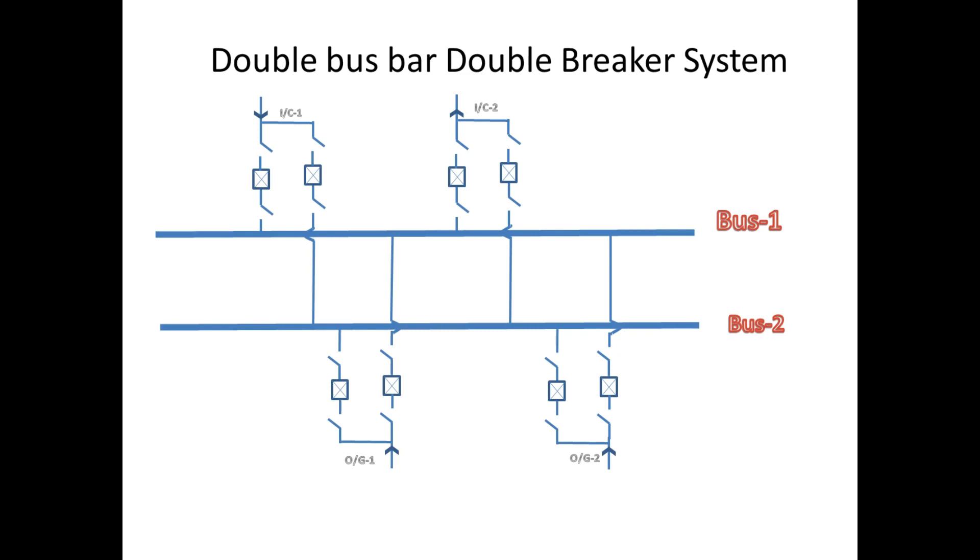Similarly, when de-energizing, first the breaker has to open, then the corresponding isolators have to be opened. This type of bus bar arrangement is mostly used in 400 kV substations.